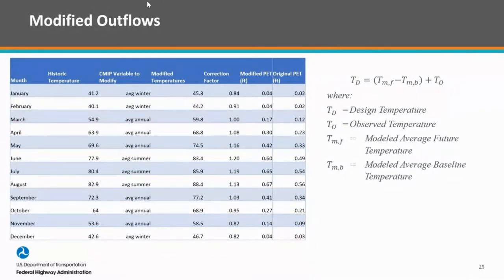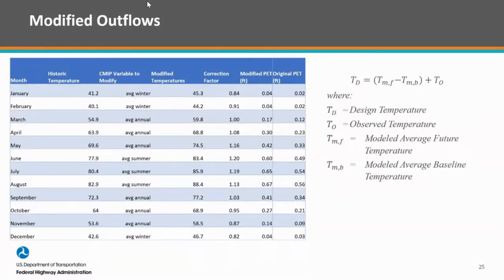Going through and looking at the temperatures and seeing how much they change, then modifying the evaporation — in the last two columns you see the original and modified evaporation. For the most part, across the board, you get more water loss from evaporation.